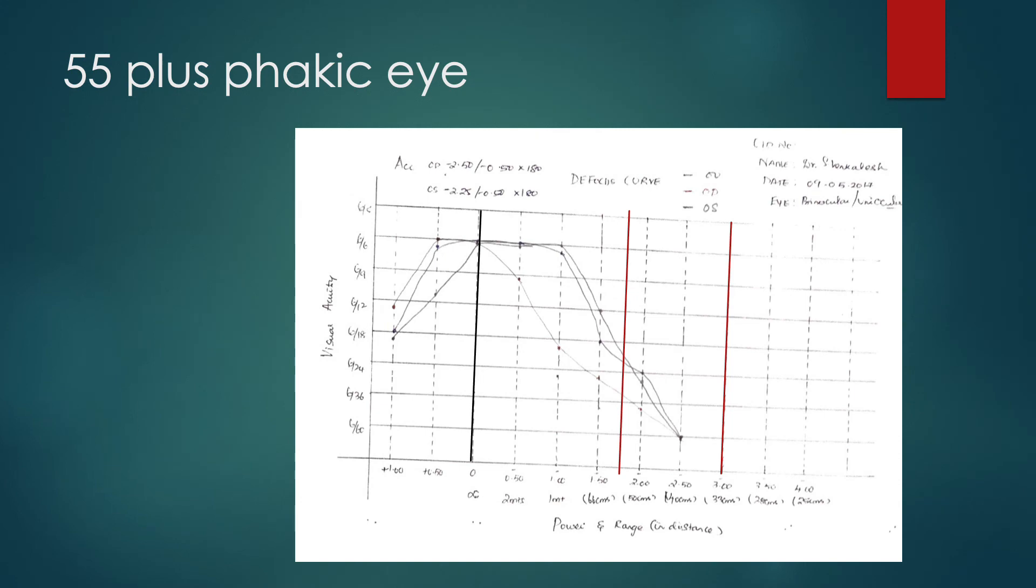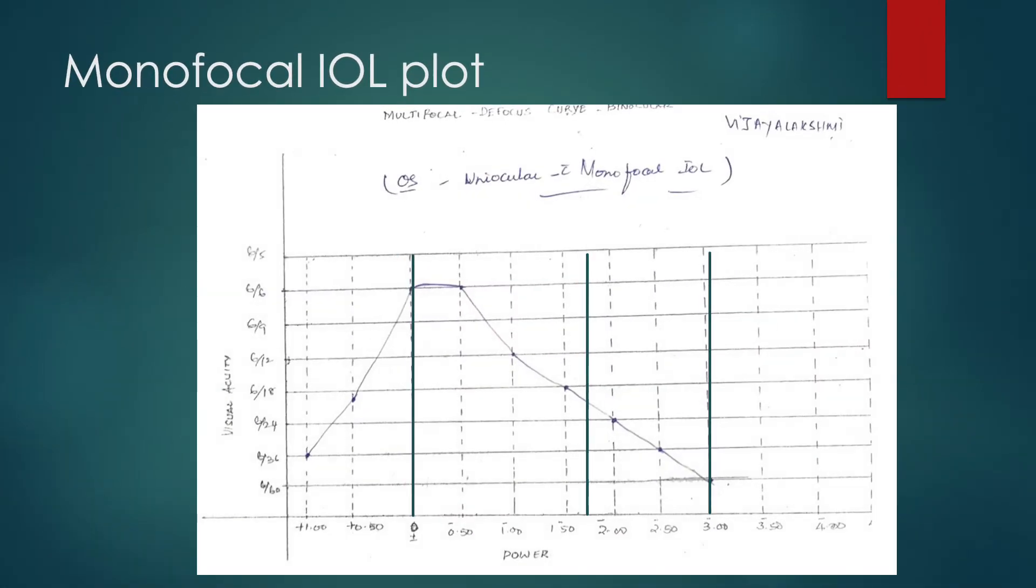This is how a defocus curve looks in a 55 plus phakic patient whose amplitude of accommodation is down to say 1 or 1.5 diopters. This curve shows good visual performance for distance, poor visual performance for intermediate vision and extremely poor performance for near vision. Incidentally, this is my own binocular defocus curve plot. Let us compare this with a binocular defocus plot in a patient who has received a monofocal IOL implantation. It looks pretty much similar to the previous one, which is a plot done in a 55 year old phakic patient. Good distance but poor intermediate and very poor near visual outcome. This patient will definitely need to wear progressive glasses at least 80% of the time if not constantly.